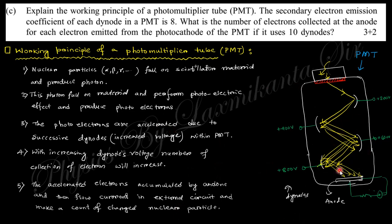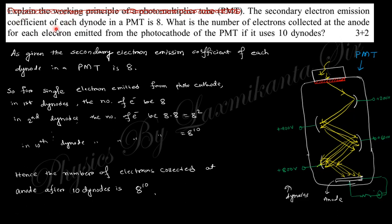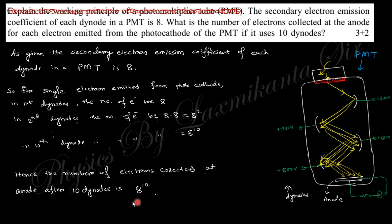The multiplied electrons are finally collected at the anode, which produces a current in the circuit — allowing the count of incident particles to be measured. The secondary electron emission coefficient of each dynode in a PMT is 8. So for 10 dynodes, a single electron produces 8¹⁰ electrons total. After 10 dynodes, the total number of electrons is 8¹⁰.